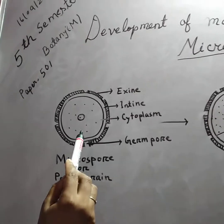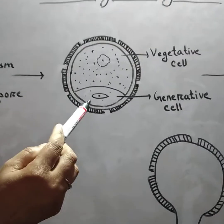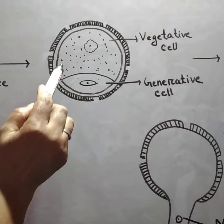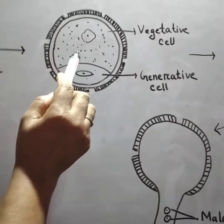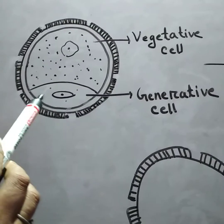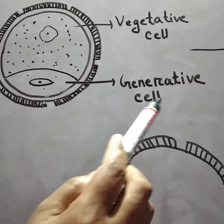It divides into two cells. One is larger with abundant cytoplasm and irregular nucleus, known as vegetative cell, and the other one is smaller, known as generative cell.